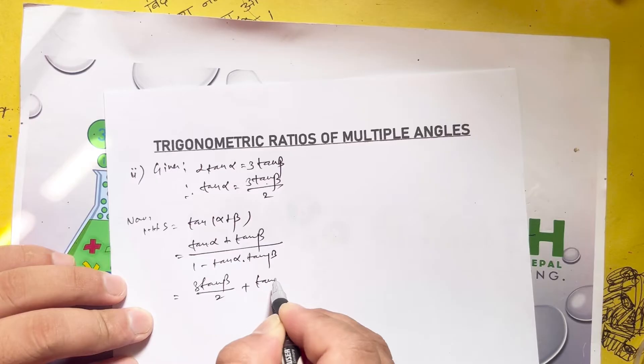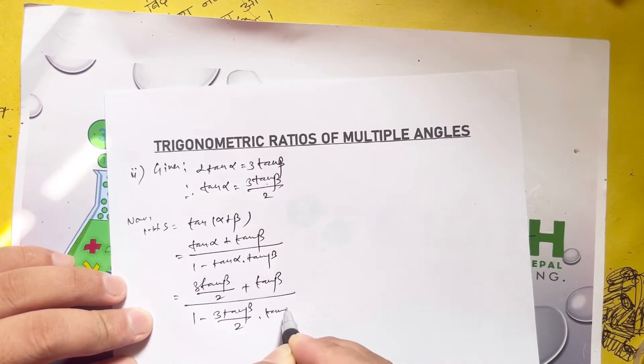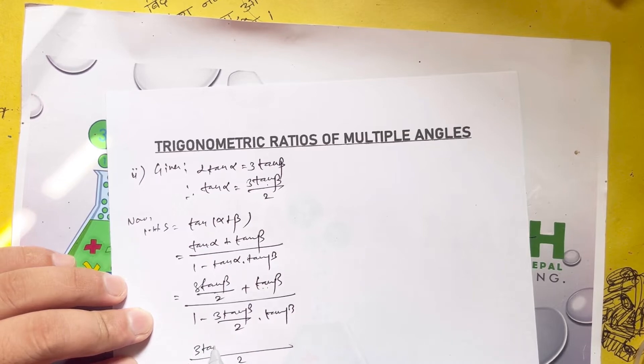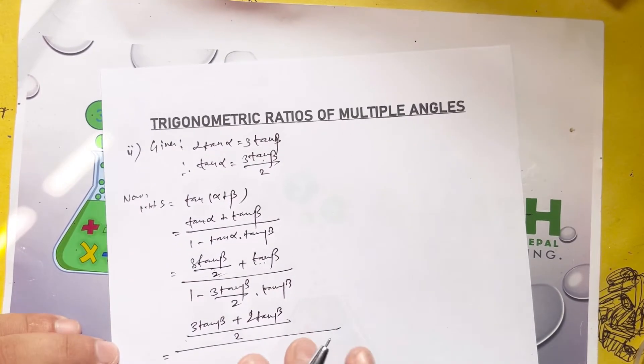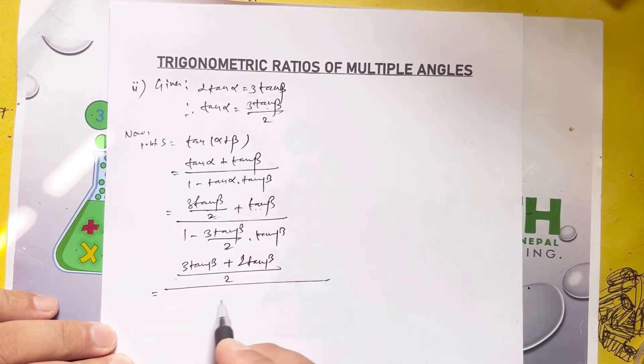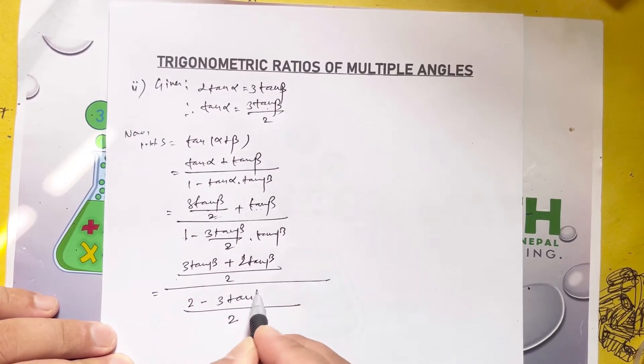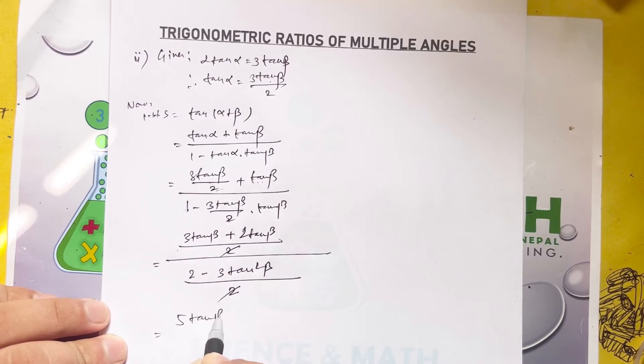Using the formula for tan A plus B, we have tan alpha plus tan beta divided by 1 minus tan alpha tan beta.